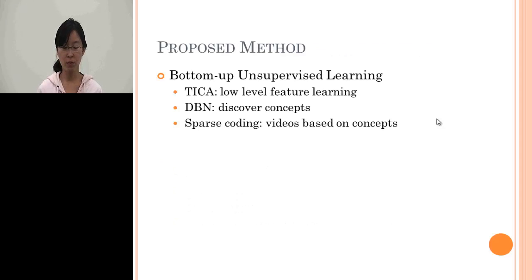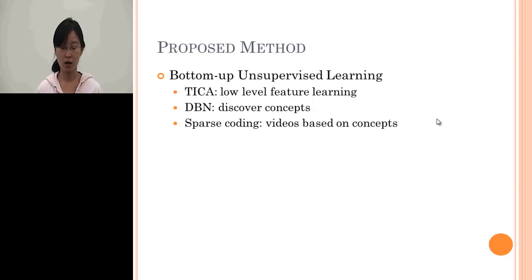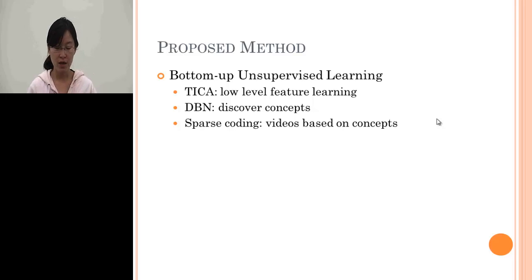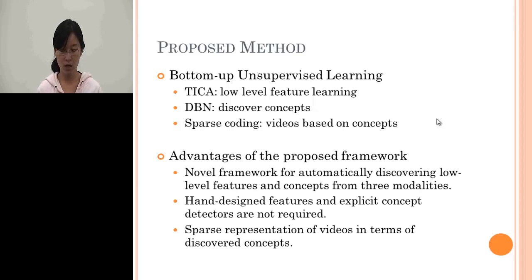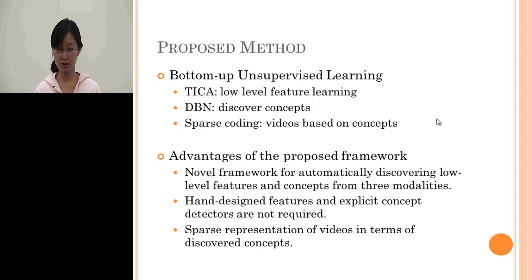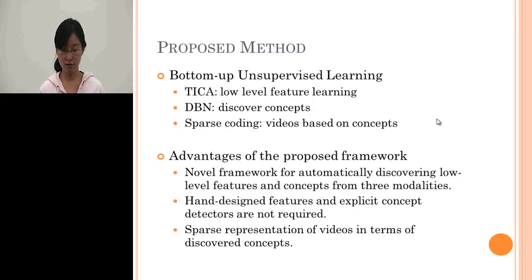We propose a bottom-up unsupervised learning method. We learn low-level features using topographic independent component analysis from raw pixels, and then use deep belief nets to discover concepts from the TICA features. Videos are then represented using a sparse coding method. The advantage is that it can automatically discover low-level features and concepts from three modalities without hand-designed features or concept detectors.